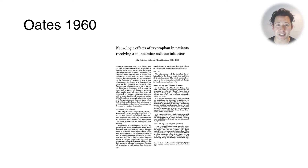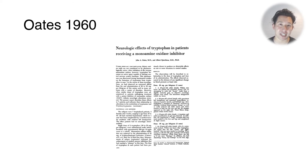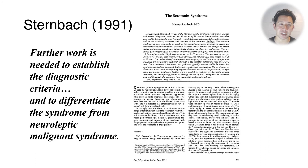It was first described in 1960 by a guy called Oates, who described a patient who was taking tryptophan and a monoamine oxidase inhibitor. Taking two different serotonergic agents at once is a really key thing to remember about people that develop severe serotonin toxicity.